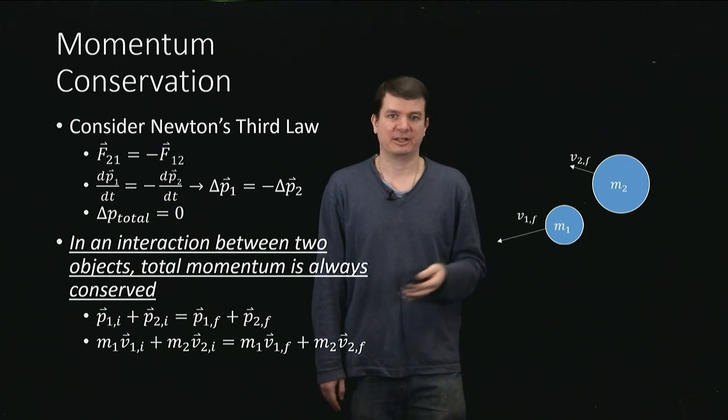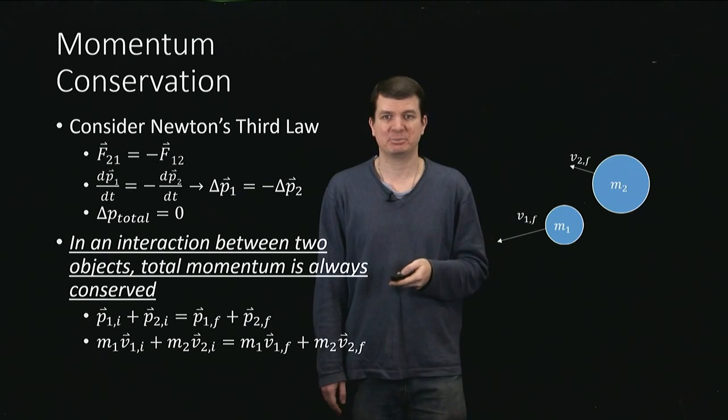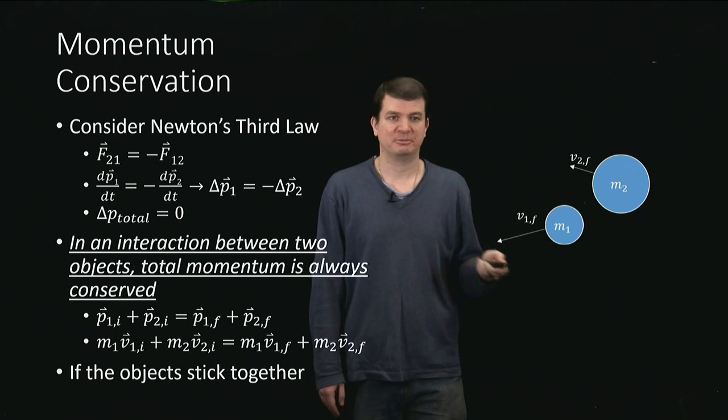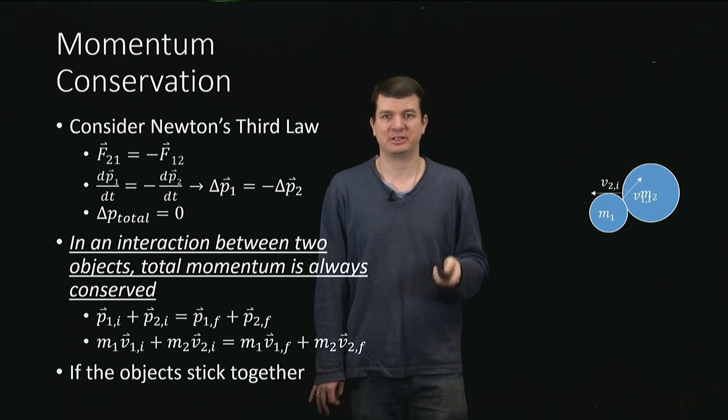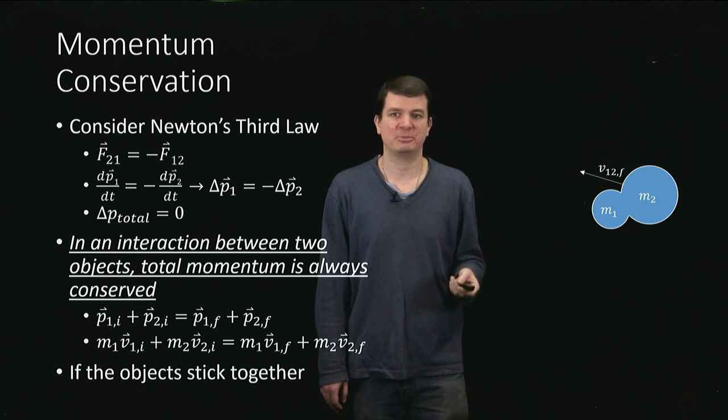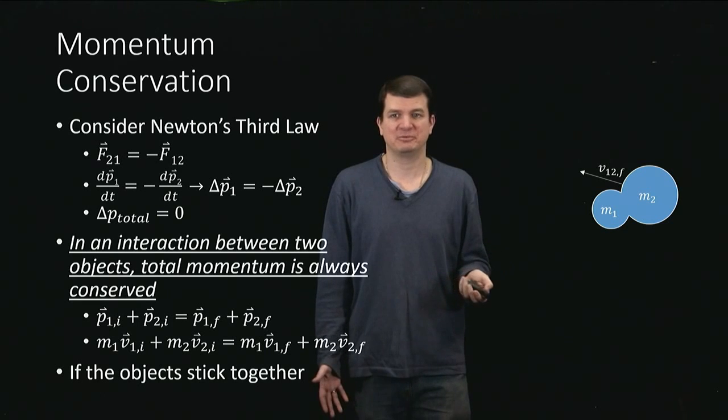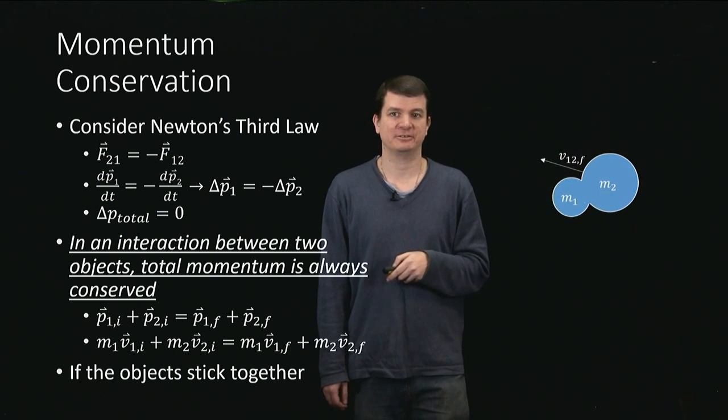Now, in a collision, more can happen. We don't have to actually move apart separately. These objects could stick together. And if they do that, well, then again, they'll have collided with these initial velocities, v1 initial and v2 initial, but then they'll stick together into some new blob and move off together with some new velocity, which we'll call v12. They'll just move off together as shown.